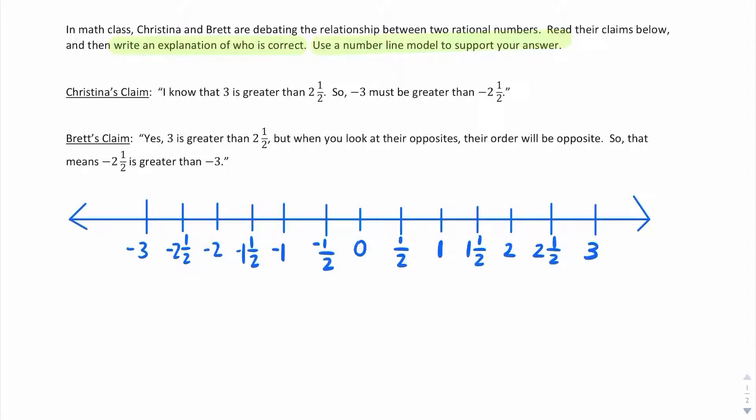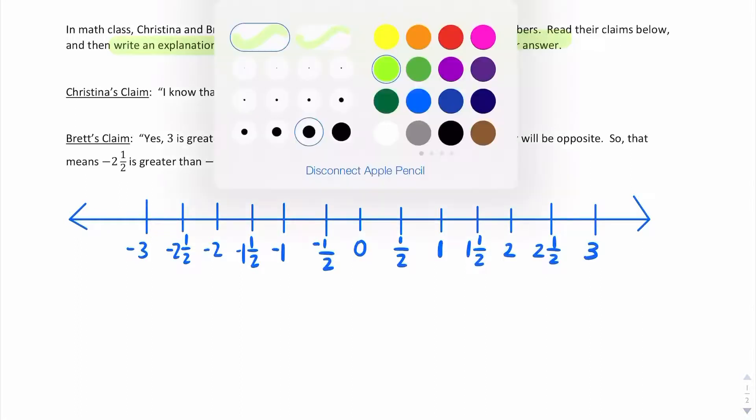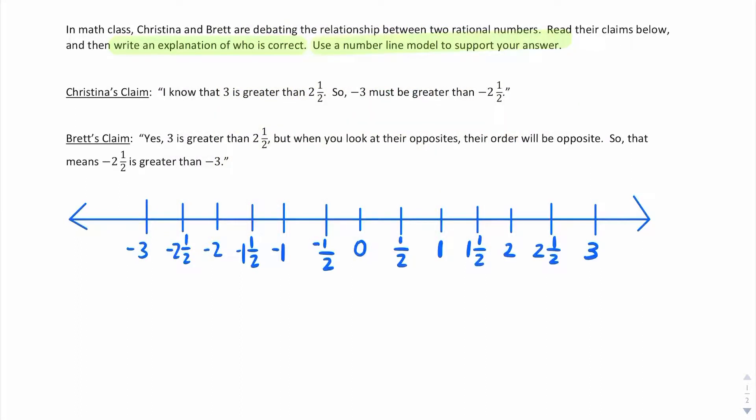So let's go back to the two claims. First of all, Christina says she knows 3 is greater than 2 and 1 half. And actually, Brett agrees with her on this statement. So she says 3 is greater than 2 and 1 half. He agrees, yes, 3 is greater than 2 and 1 half. They are both correct on that.